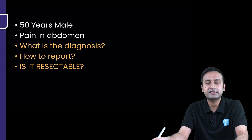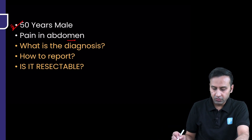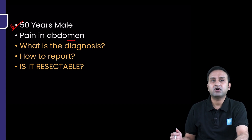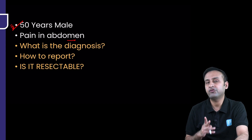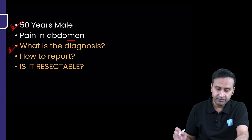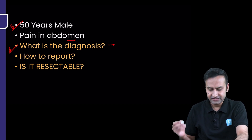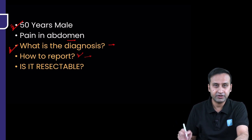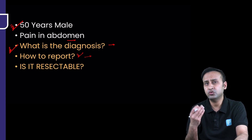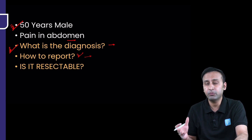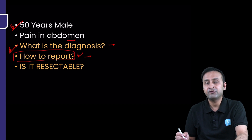Let's start our discussion with a classical clinical case. This is a 50-year-old male who came to us with pain in the abdomen. I'll be showing you the cine clips of the CT image, but before that there are three important things to keep in mind: first, what is the diagnosis — make a wild guess; second, how to report it; and third, what are the important parameters to keep in mind before you report.